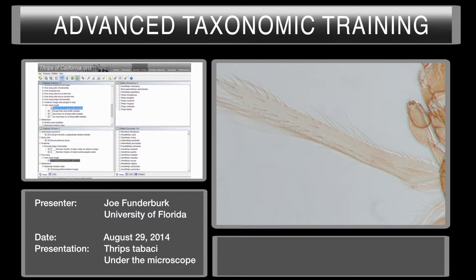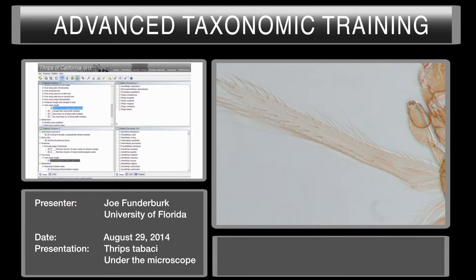So I'm going to choose that. We're down to nine species at this point. By the way, this wing looks like it might actually be upside down by the way it's mounted — sometimes we don't have perfect specimens to work with — but we can still see the characters well enough.